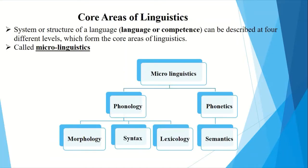The core areas of linguistics deal with the system or structure of a language, also called langue or competence. It can be described at four different levels, and these levels make the core areas of linguistics. These areas are also called micro linguistics. In micro linguistics we have phonetics, phonology, morphology, syntax, lexicology, and semantics. We discussed micro linguistics in the first part of this lecture, but in this second part we are going to concentrate on macro linguistics.